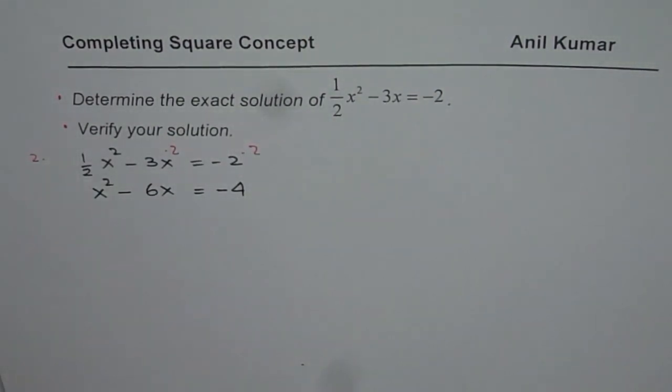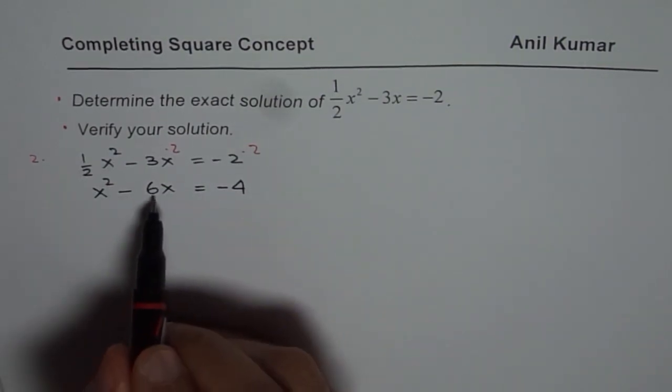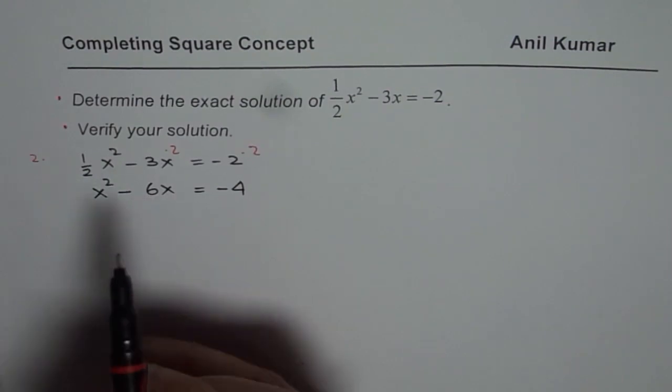The second step for me should be what? We need to complete the squares, right? How do you complete the squares? Complete the squares by adding half of 6 which is 3 square of that.